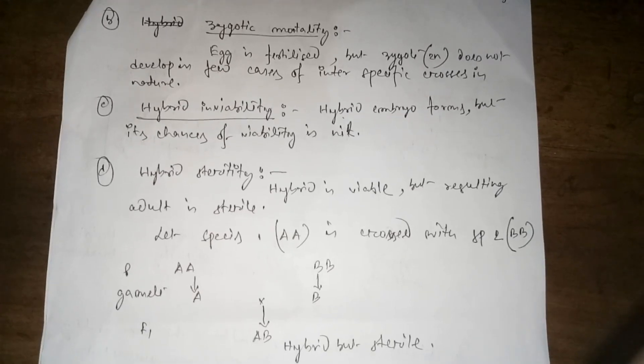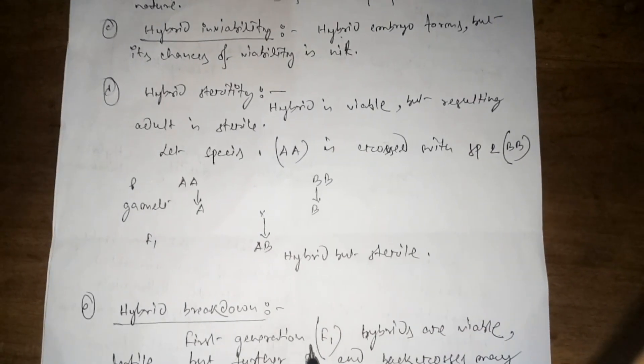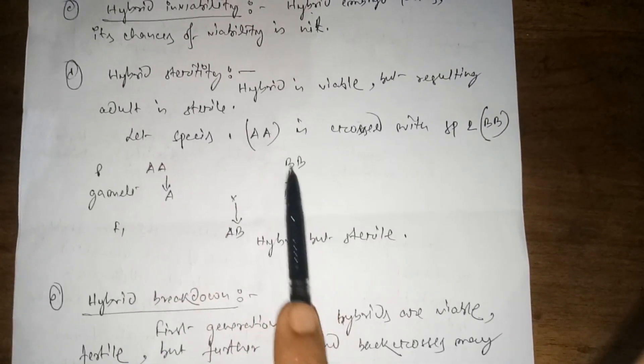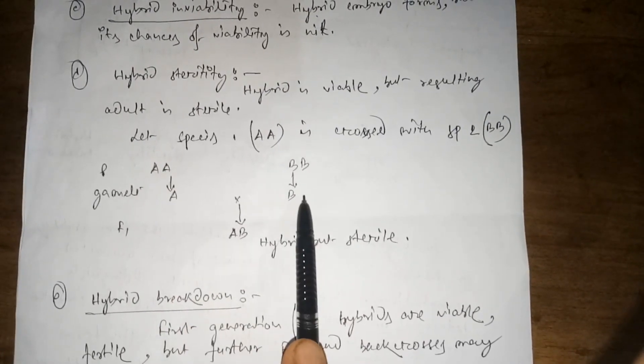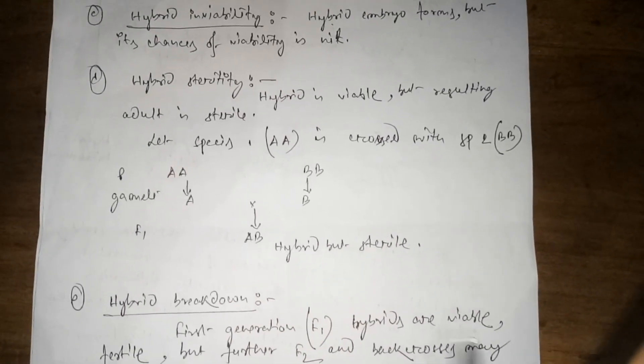Hybrid inviability: the hybrid embryo forms but its chances of viability are nil. Hybrid sterility: the hybrid is viable but the resulting adult is sterile. For example, if species AA is crossed with species BB, the F1 hybrid AB forms but that hybrid is sterile.